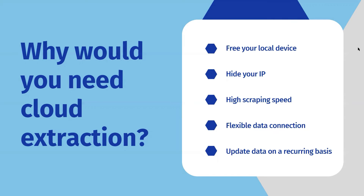Second of all, you can hide your IP. As tasks run in the cloud server, they will use our cloud IPs to access the web pages, so your local IP will be protected. You can also have high scraping speed. Cloud extraction can speed up the scraping six to ten times local runs by splitting the task into sub-tasks and running multiple sub-tasks at the same time.